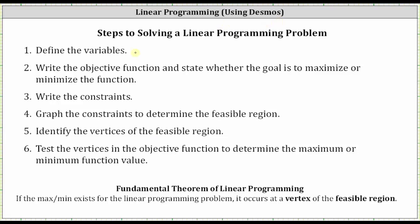The first step in solving a linear programming problem is to define the variables. Step two is to write the objective function and state whether the goal is to maximize or minimize the function. Step three, write the constraints.